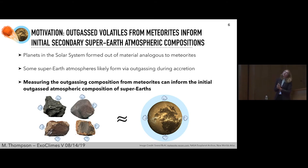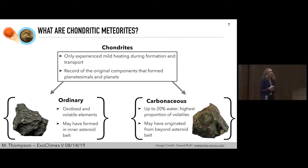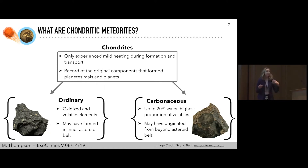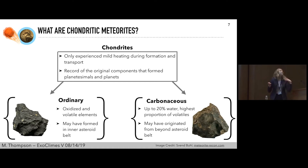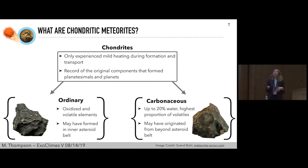So when I say meteorites, what type am I talking about? For those not as familiar with cosmochemistry, there are two main types of meteorites: those that went through significant heating and differentiated and melted, and those that didn't. For the work I'm doing, I'm focusing on meteorites called chondrites — the ones that did not experience a significant amount of heating. They are believed to be a record of the original components that formed planetesimals and planets in our solar system.